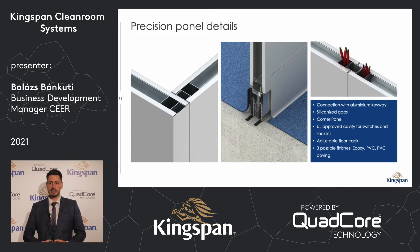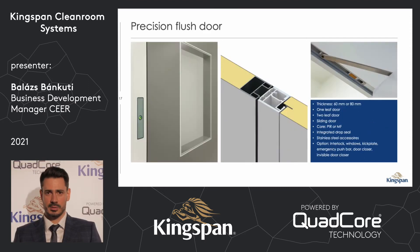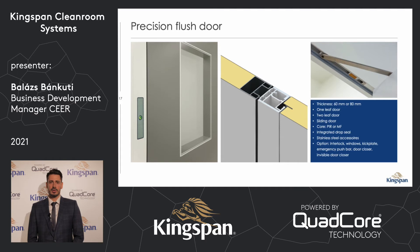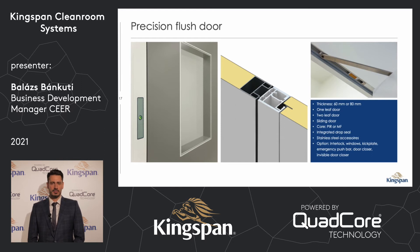Each panel has a cavity where you can place the cables. This slide shows some details about our precision door. On the left side you can see the integrated interlocking system and the vision panel. In the middle you can see the connection between the panel and the door frame, and on the right you see a door closer. All doors come with an automated drop seal. As an option you can add a kick plate, an interlocking system, adjustable hinges, or any possible accessories.